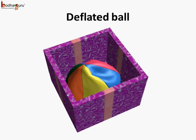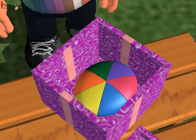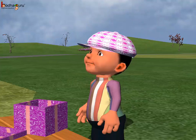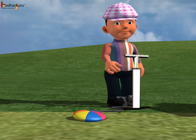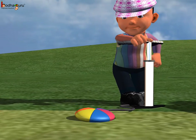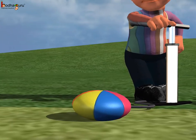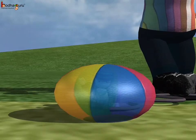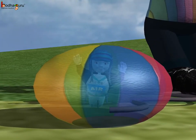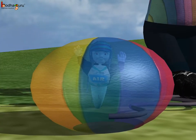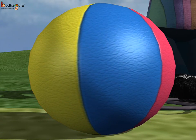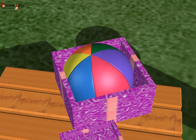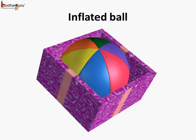What did we see? When there is no air in the ball, we call it a deflated ball. And when the air is filled inside the ball, it swells up and becomes big. This is an inflated ball. And what do we see? The inflated ball takes up more space.